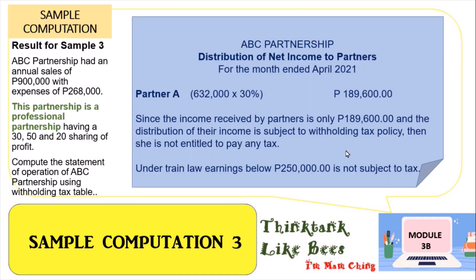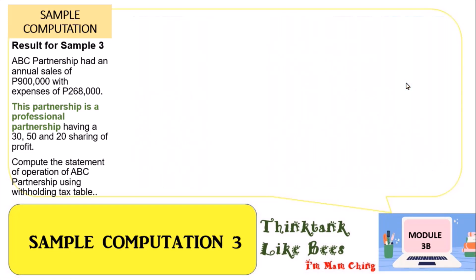For Partner A using the withholding tax table, 632,000 multiplied by 30 percent gives 189,600. Based on the tax bracket, she has a zero percent tax rate since her income is only 189,600, which falls under the tax-exempt threshold.